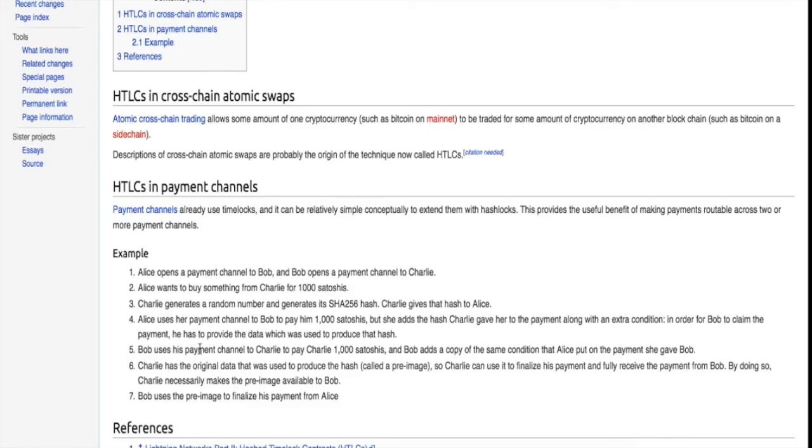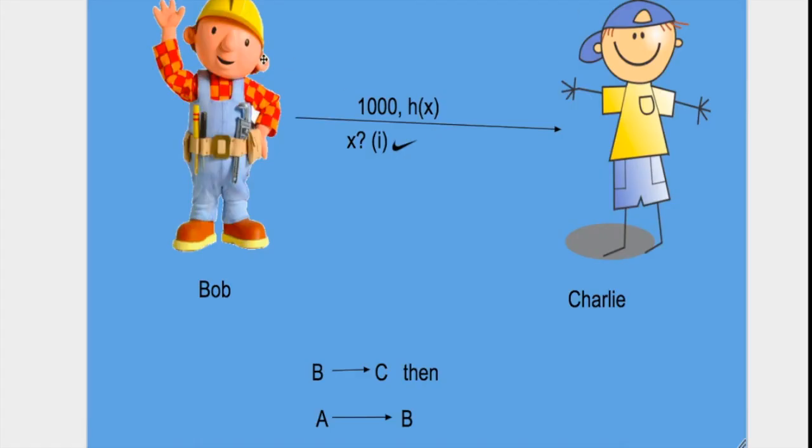Bob uses his payment channel to Charlie to pay Charlie 1000 satoshis, and Bob adds a copy of the same condition that Alice put on the payment channel she gave Bob. Bob says to Charlie that you would be able to retrieve these 1000 satoshis if you provide me with X. But Charlie created the X himself and he knows X and H(X), so Charlie provides Bob with X.